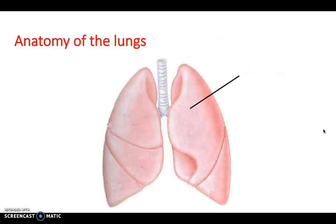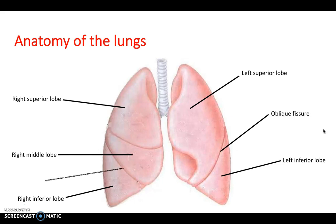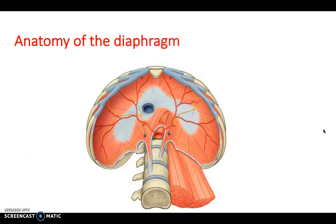The lungs are divided into lobes: the left has two, the right has three — superior, middle, and inferior. On the left these are separated by an oblique fissure; on the right by two fissures, an oblique and a horizontal. Also note the cardiac notch where the heart sits, and the tracheal bifurcation at the carina.